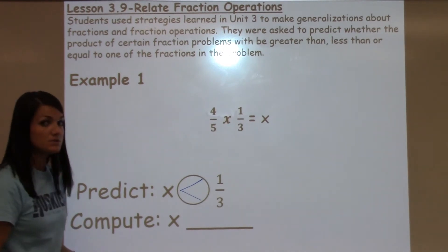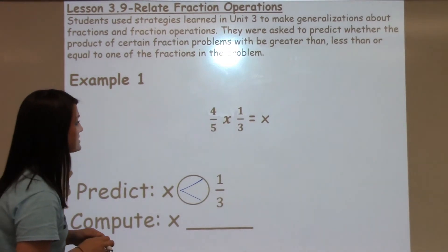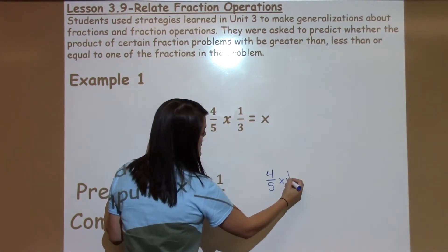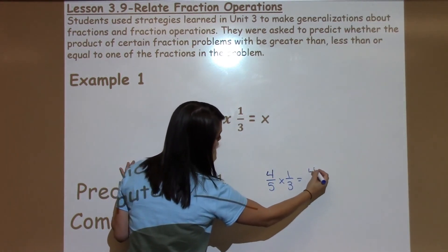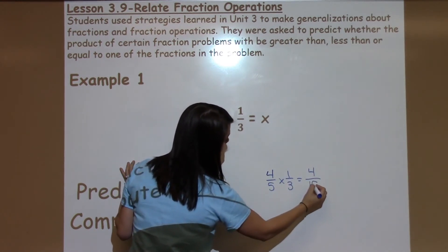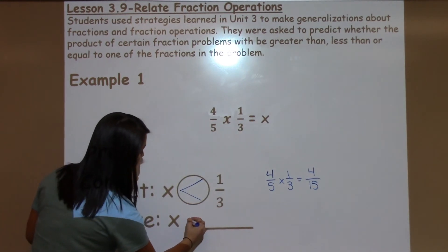Then, I will actually compute to figure that out and see if I'm correct. So, when I multiply two fractions, I just do top times top and bottom times bottom. 4 times 1 is 4, 5 times 3 is 15, and my answer is 4 15ths.